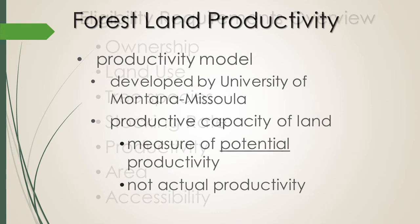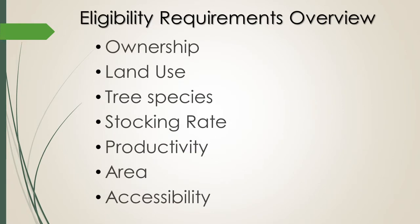Next we're going to talk about the eligibility requirements to get the forest land classification. These requirements are interrelated and bounce back and forth. The first one is ownership of the parcel, and that ownership is of the land itself, not the timber rights. The timber rights are not included — we're looking at what the land can produce, so it's the ownership of the land.